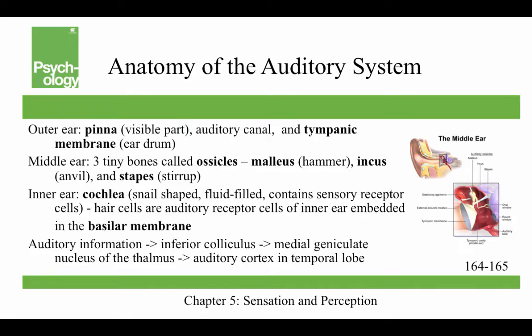Let's talk about the auditory system. You have your outer ear — the pinna, which is the visible part — an auditory canal, and a tympanic membrane, also called the eardrum. In the middle ear there are three tiny bones called the ossicles: the malleus (hammer), the incus (anvil), and the stapes (stirrup). The inner ear is made up of the cochlea, a snail-shaped, fluid-filled structure containing the sensory receptor cells — hair cells that are auditory receptor cells embedded in the basilar membrane. Sound waves travel down the auditory canal to the tympanic membrane, causing it to vibrate.